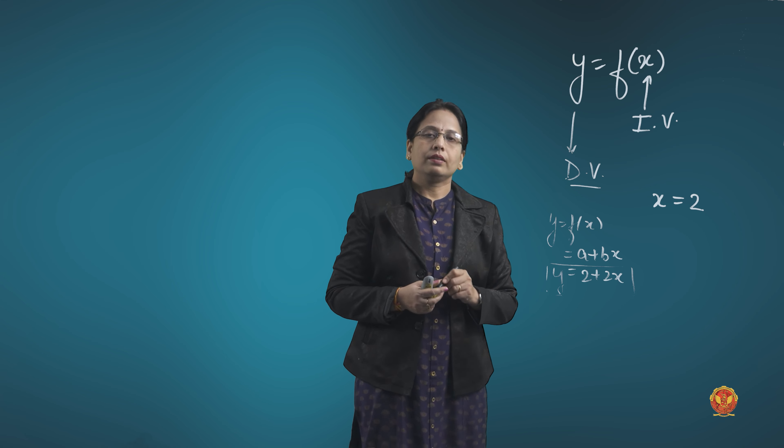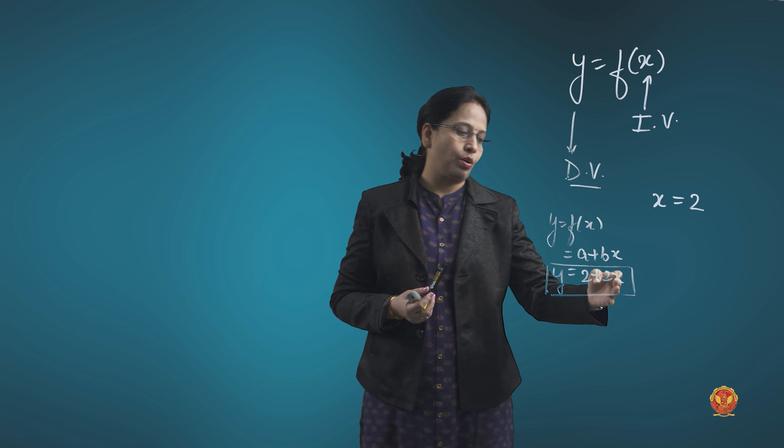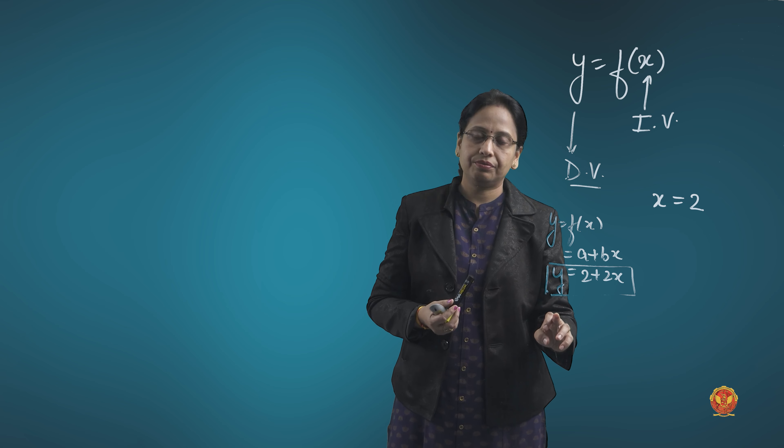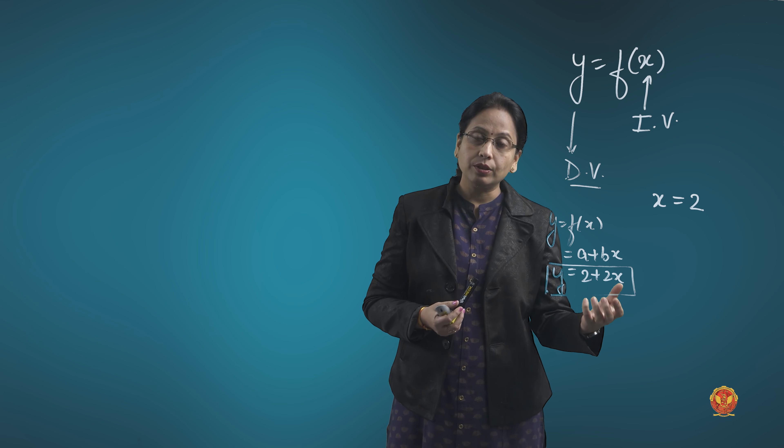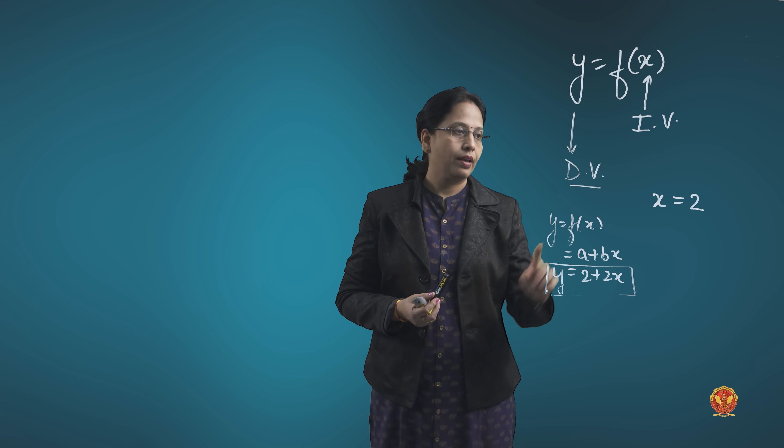One more example: if x is 2 and y is defined in terms of x like a plus bx, where a and b are given, then for different values of x you get different values of y. So y depends upon x — we need to know the value of x before we can calculate y. Therefore y is dependent and x is the independent variable.